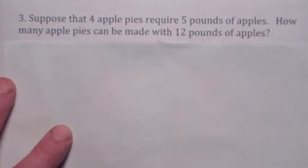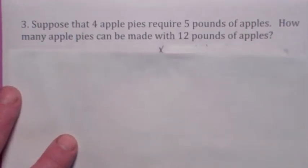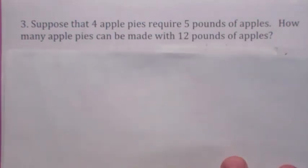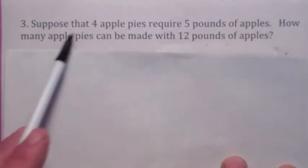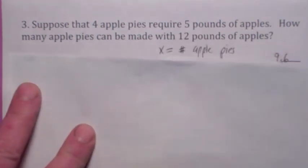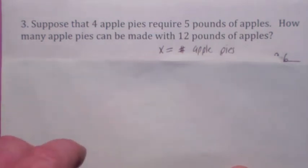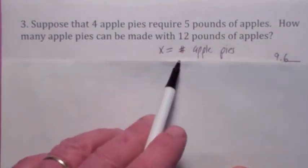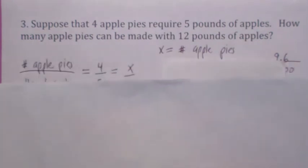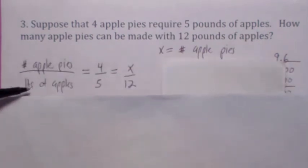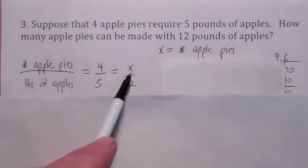Let's take a look at this next one here. Speaking of cooking, I love to cook. Suppose now we're making apple pies and we know that 4 apple pies require 5 pounds of apples. The question is how many apple pies can you make if you have 12 pounds of apples? So the variable that they're asking us to find is the number of apple pies. So if x is the number of apple pies, remember, we want to set up our proportion so that the apple pies is on the top of the fraction and the pounds of apples is on the bottom.